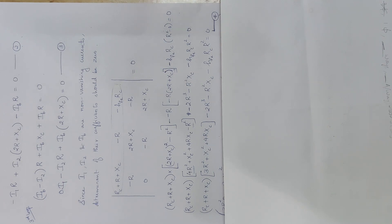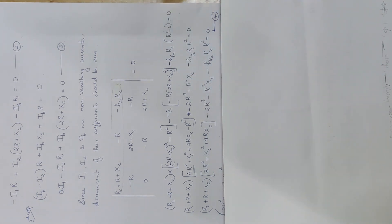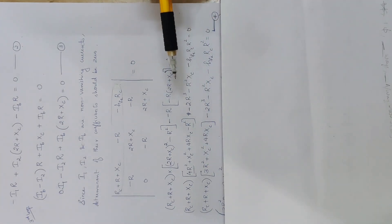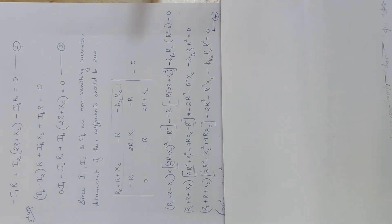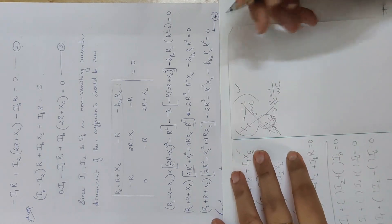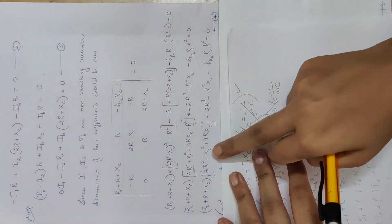We have a basic method: separate the real part and imaginary part. If we look at this, we don't have the imaginary part identified yet. What is the imaginary part? What is the j term? The j term is the imaginary part.